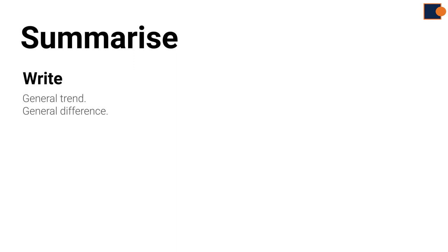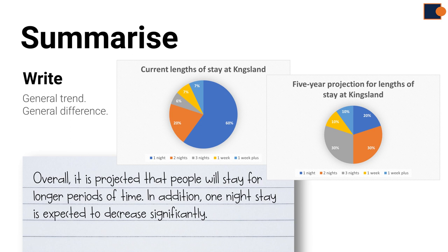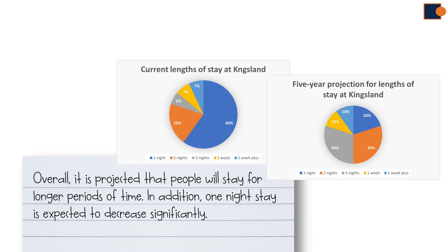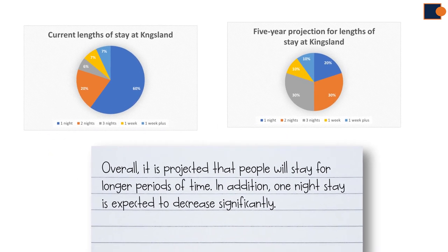Part three: writing an overview. When you're writing an overview, you can write general trends or differences. Here is an example: it is said that longer period stays will grow. If you look at the second pie chart, which shows future stays, all longer stays from two nights to a week plus are more than the first pie chart, so it is summarized as a pattern.